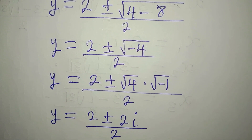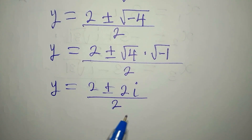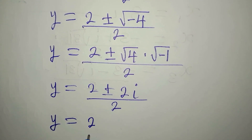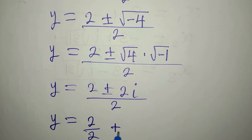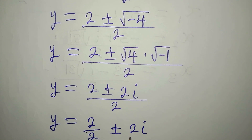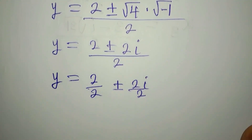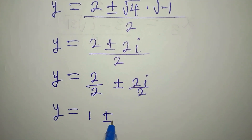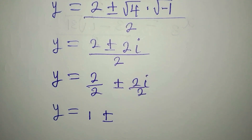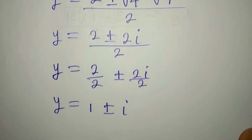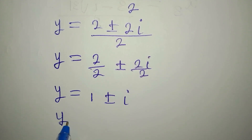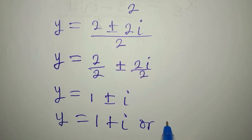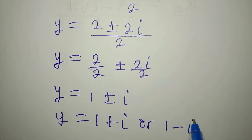This can be split: y equals 2 over 2, plus or minus 2i over 2. So 2 over 2 is 1, and 2i over 2 is i. Therefore y equals 1 plus i or y equals 1 minus i. These are our two values for y.